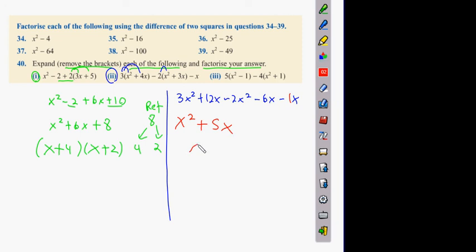Then factorize out, and you get x into x plus 5. x plus 5. And there's your 2 answers for number 40, okay? So, I'm just going to see.